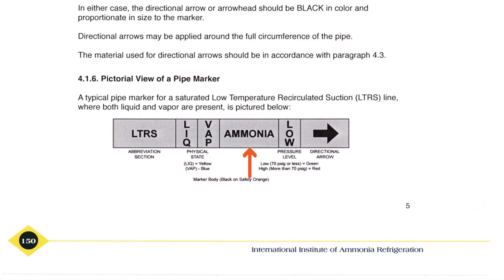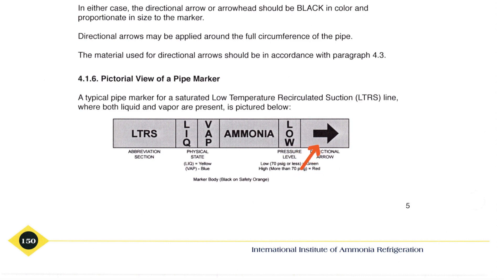Required pipe labels per IIAR Standard 2 include: the word "ammonia" printed in black letters; the physical state abbreviation — LIQ or VAP; the relative pressure — high or low; an arrow depicting the direction of flow in the pipe; and a service abbreviation indicating the purpose of the pipe.